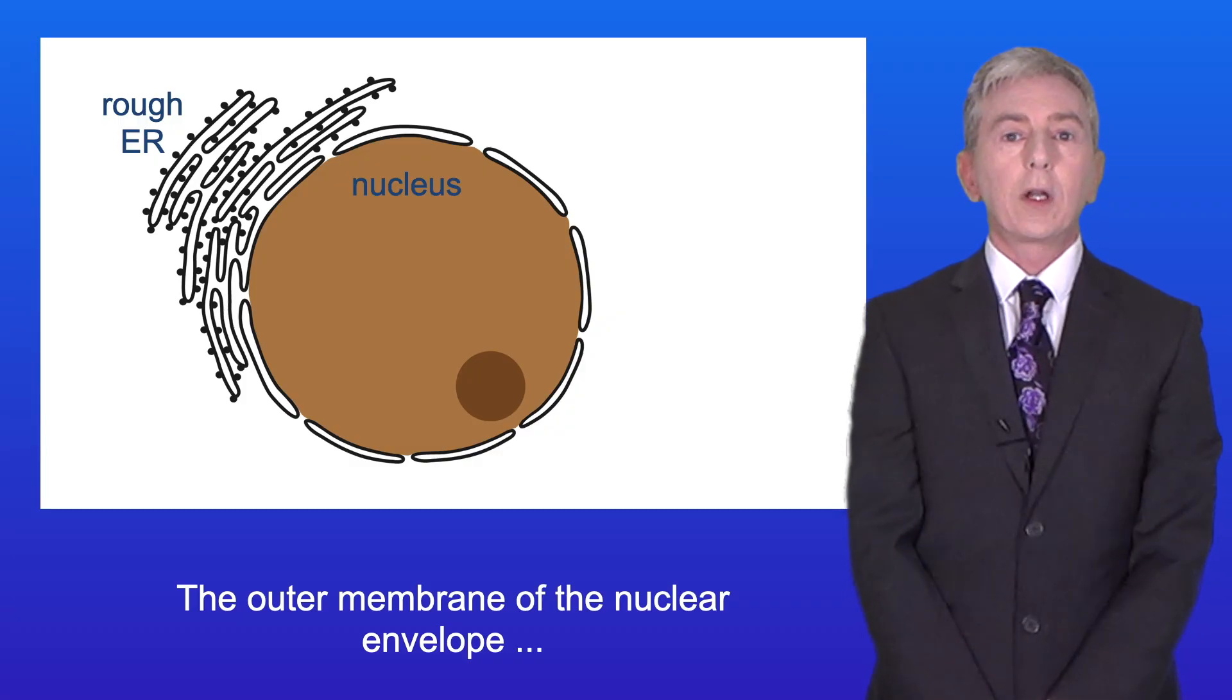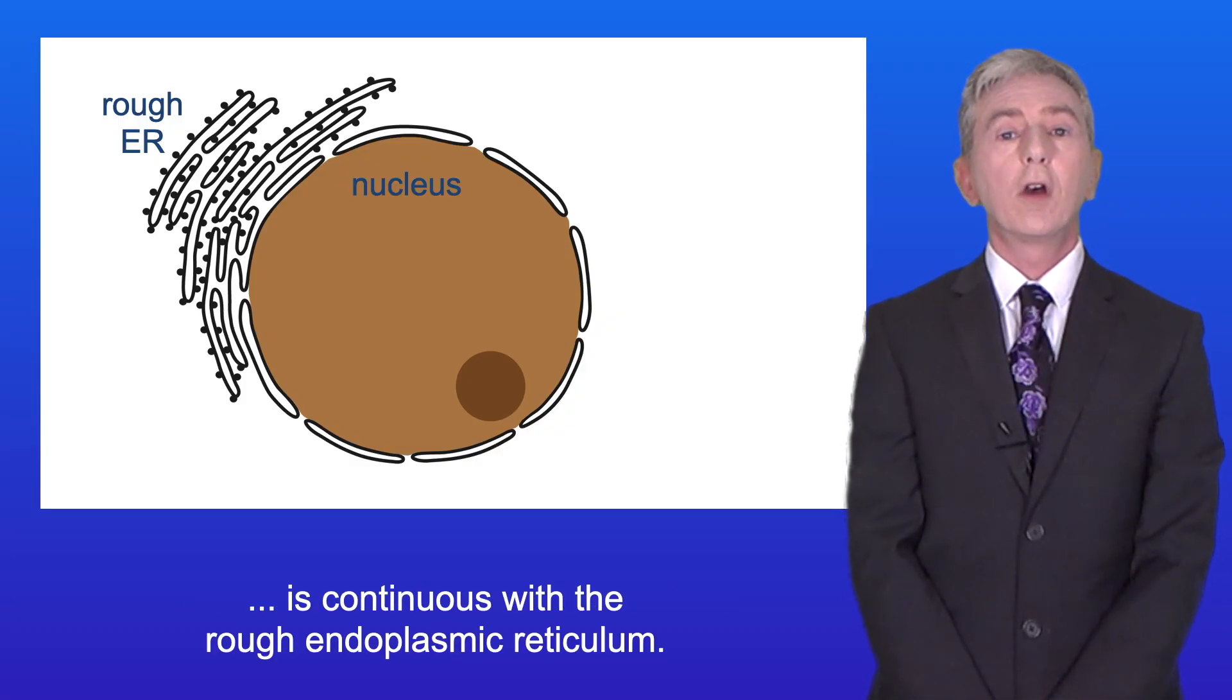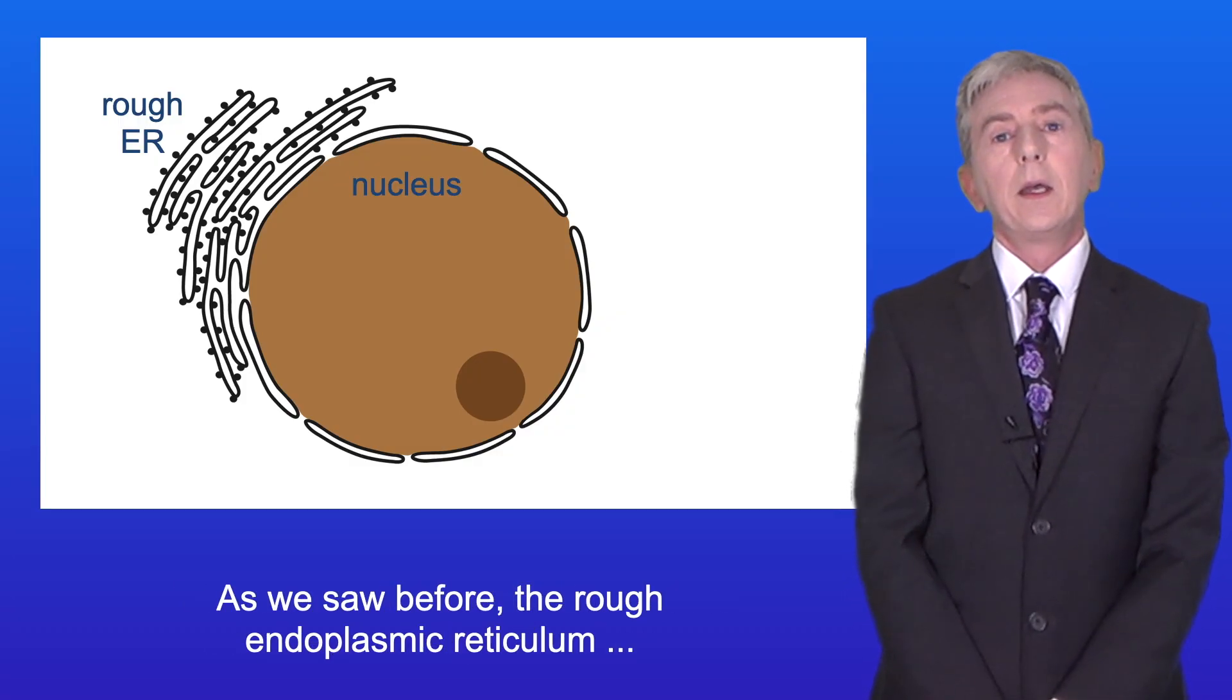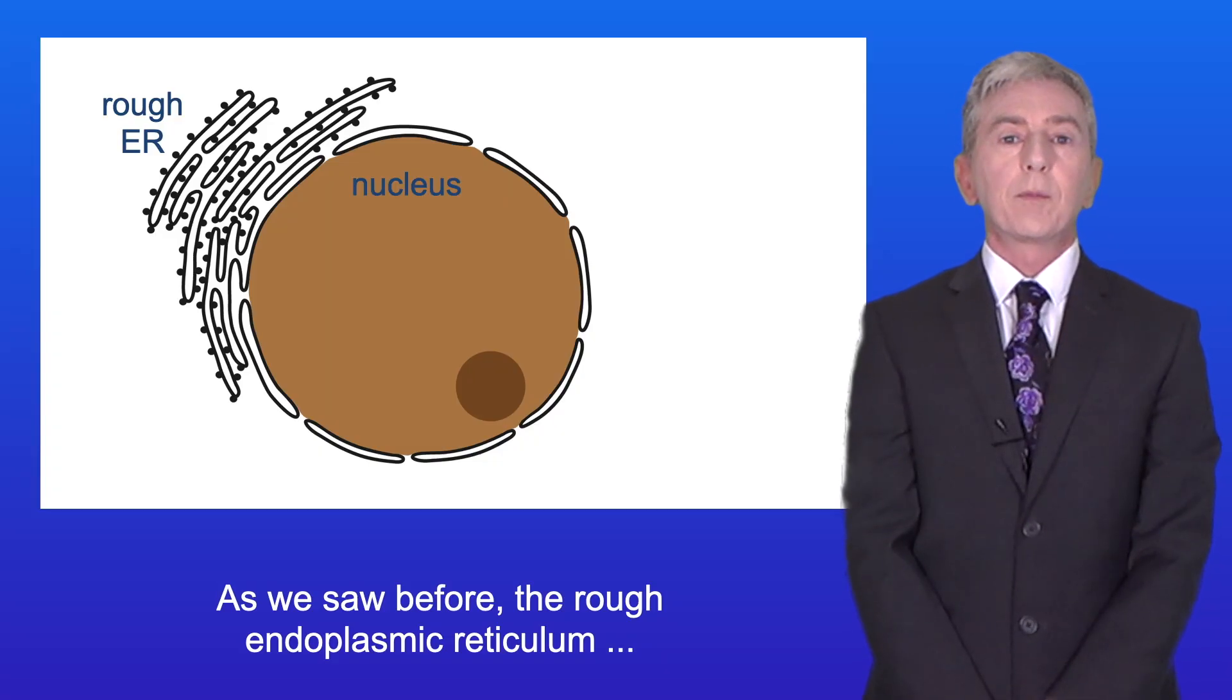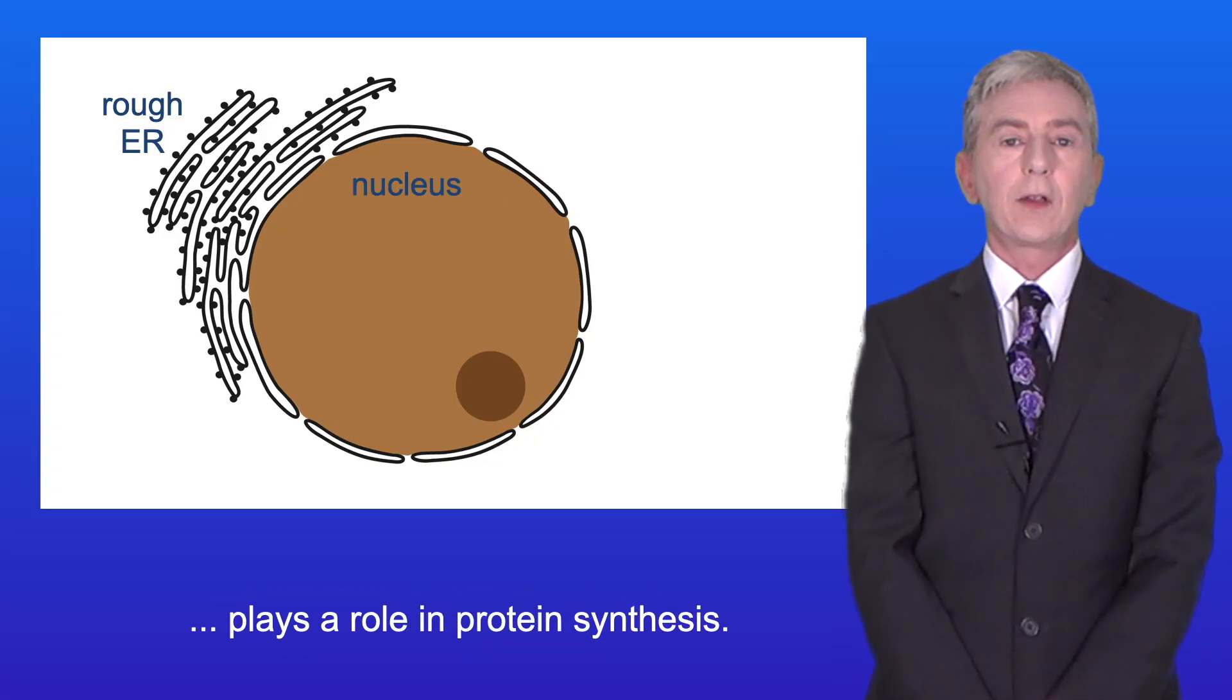The outer membrane of the nuclear envelope is continuous with the rough endoplasmic reticulum. And as we saw before, the rough endoplasmic reticulum plays a role in protein synthesis.